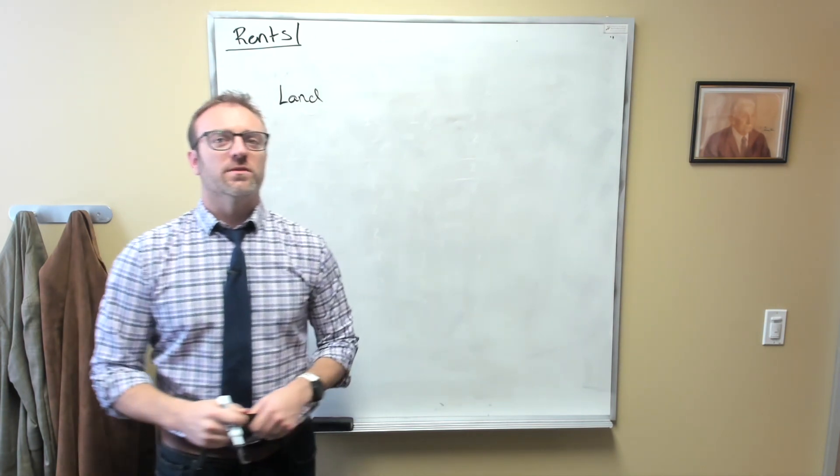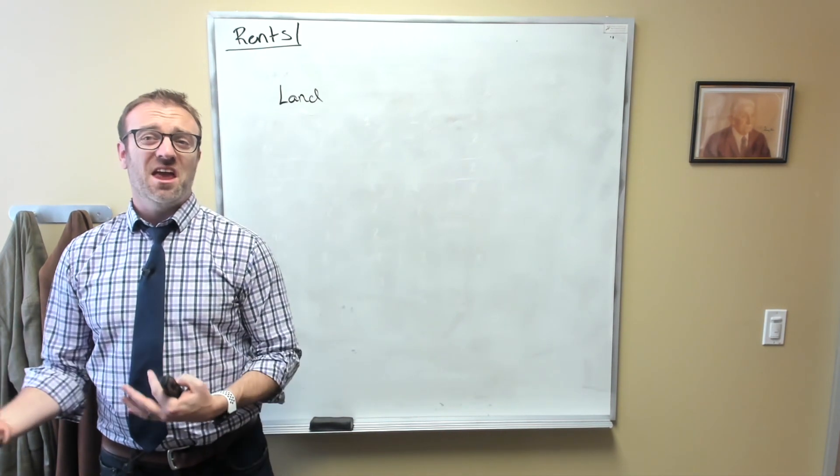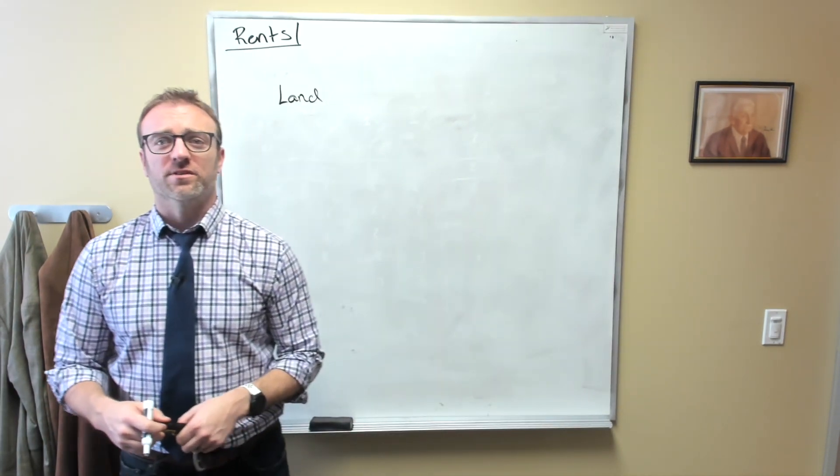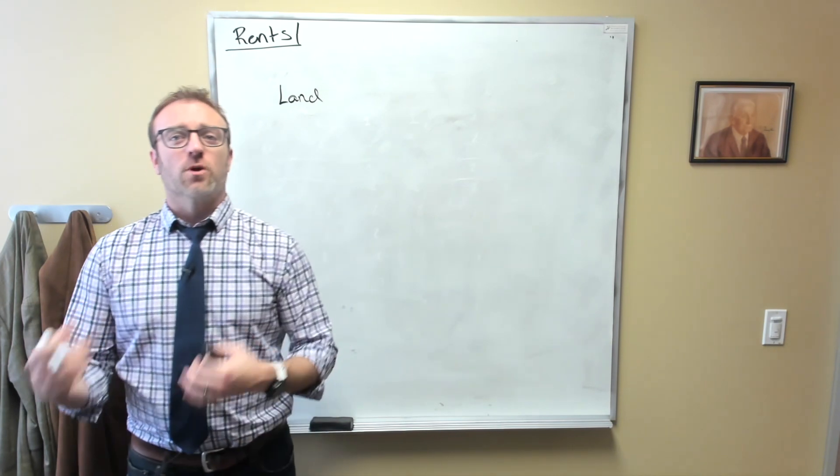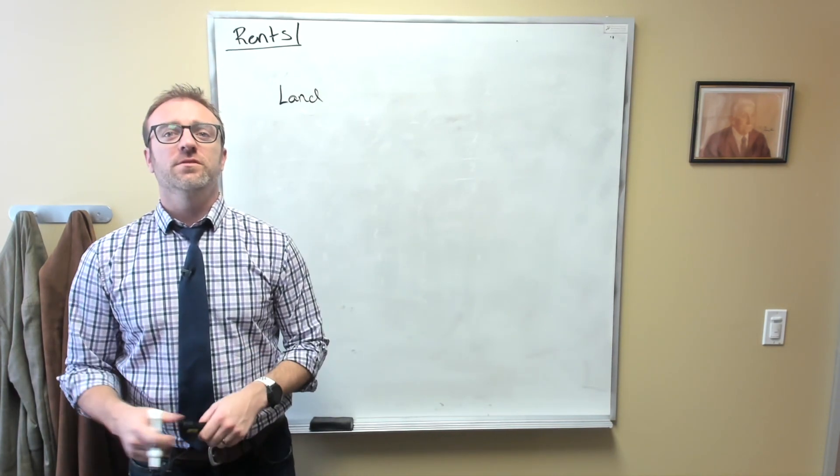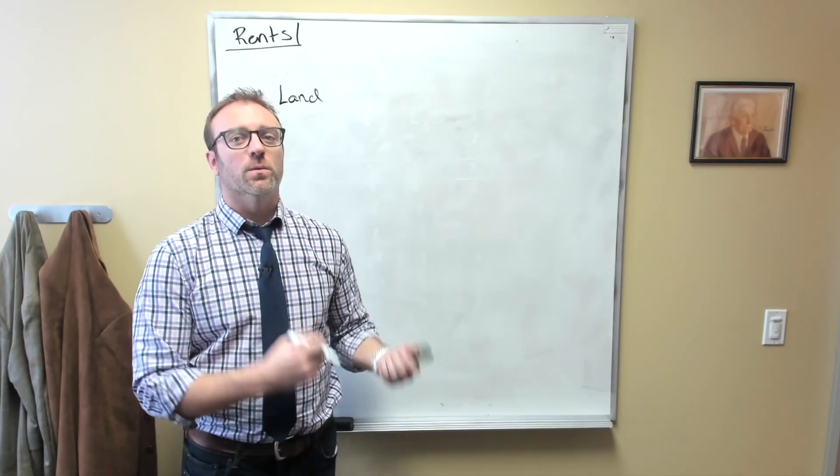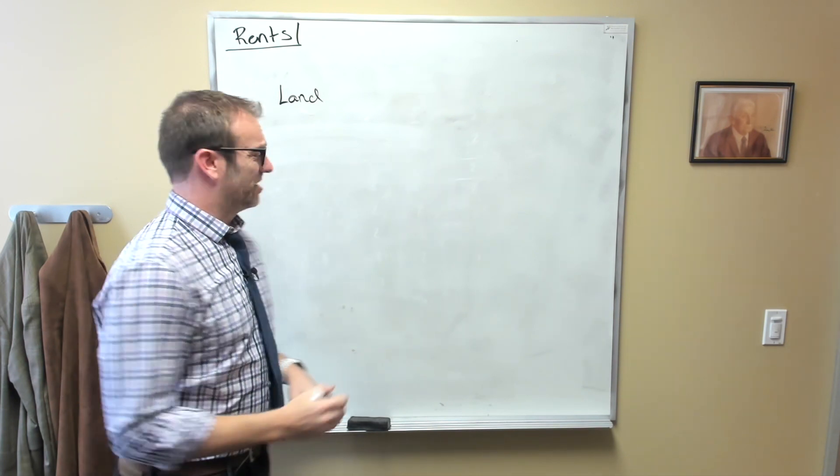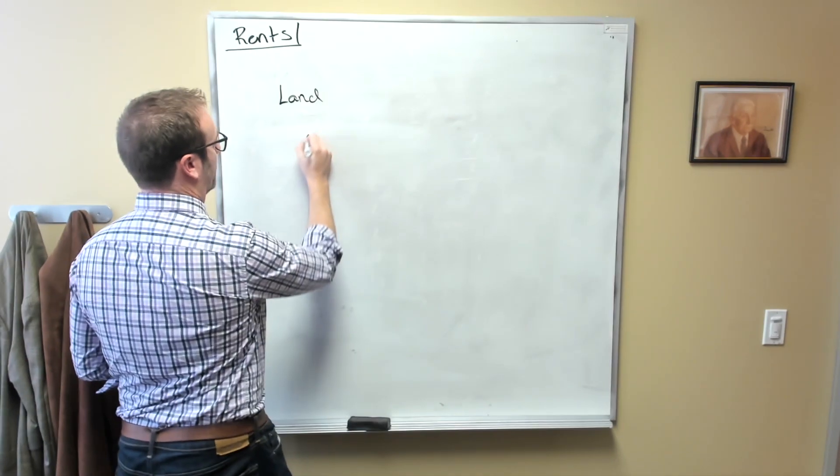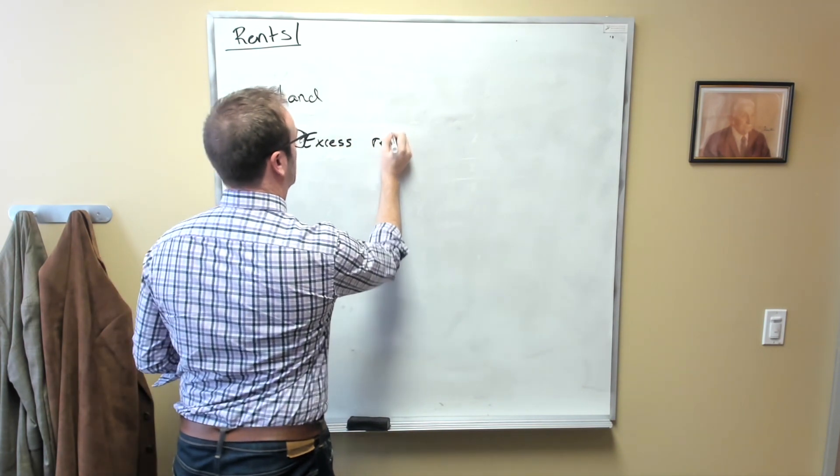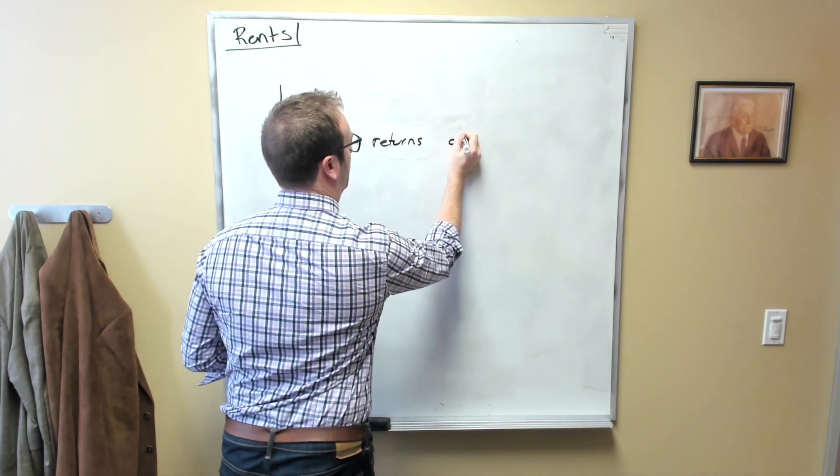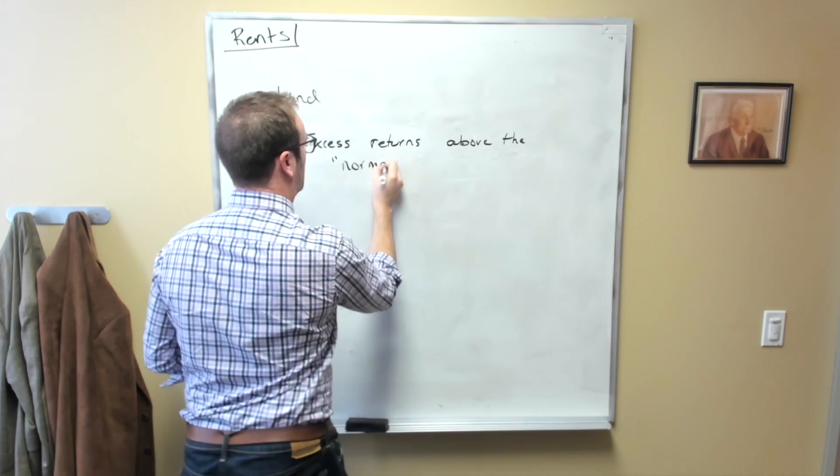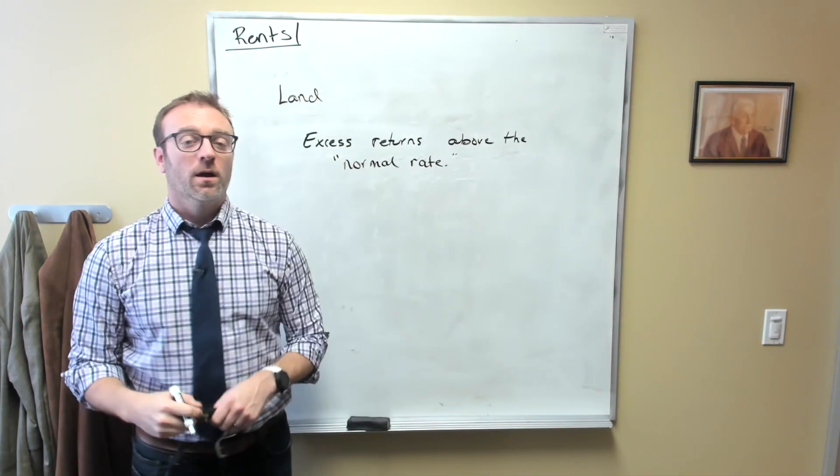So a rent is the value of services from a durable resource. The clearest example would be land. Since if we think about it, when we use land, it's not like much or any damage is happening to the land by virtue of it being used. So if we think about this a little bit further, the cost of maintaining land is at some level zero or very close to it. And so if we can charge people to use the land, then the revenue received would be considered a rent. Now, Bob Tolleson offers us a different definition, and he defines them as excess returns above the normal rate.